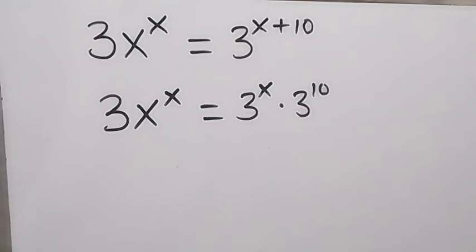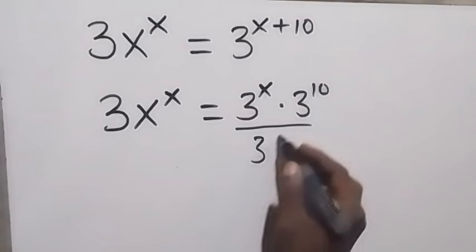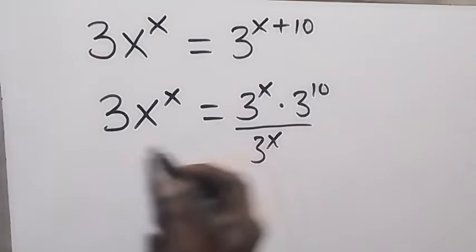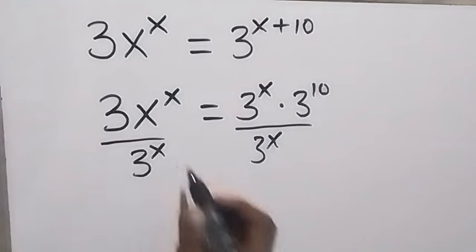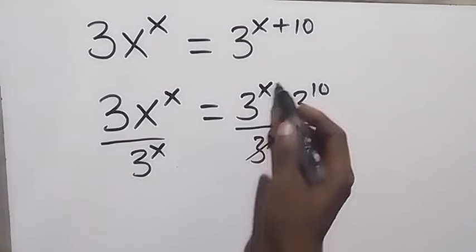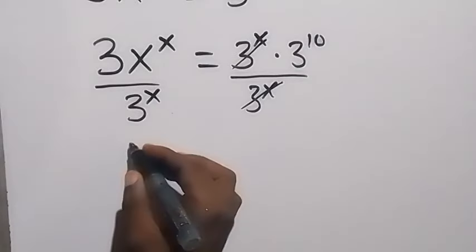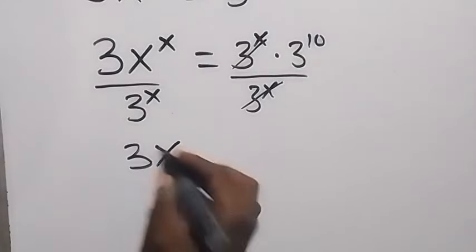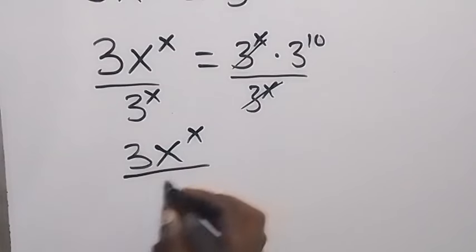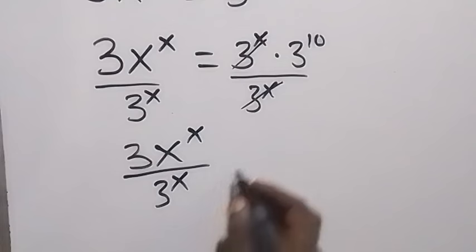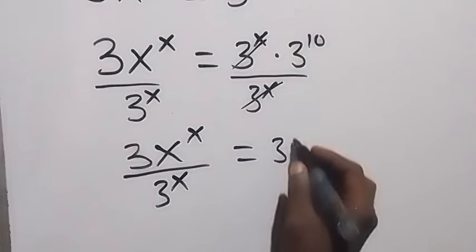In the next step, let's divide both sides by 3 raised to power x in order to remove 3 raised to power x here. So we divide both sides by 3 raised to power x, and 3 raised to power x cancels, leaving 3x raised to power x over 3 raised to power x, which equals 3 raised to power 10.